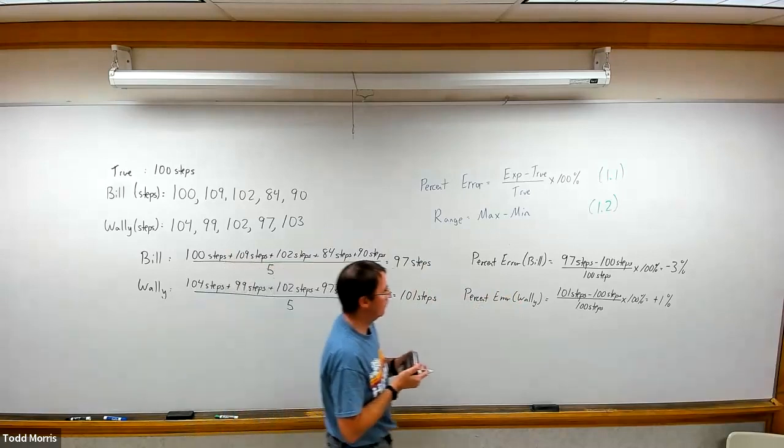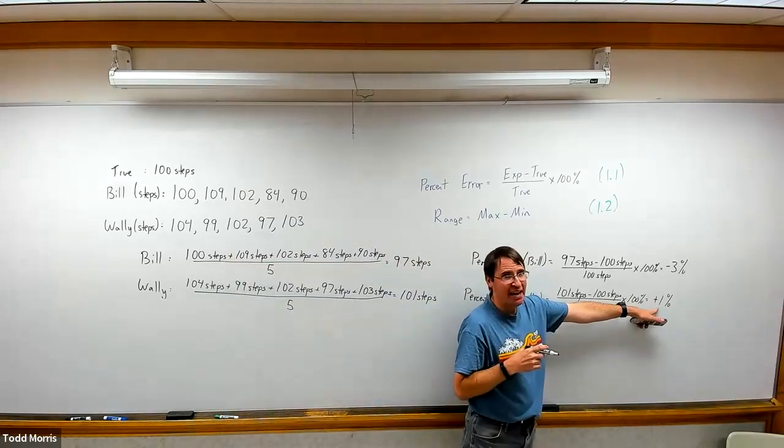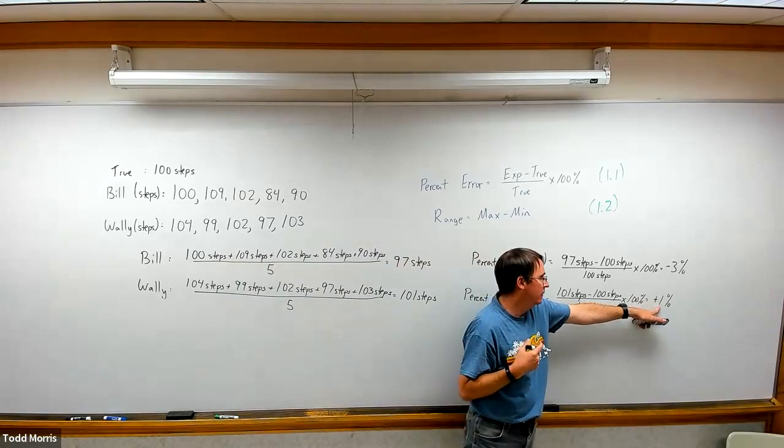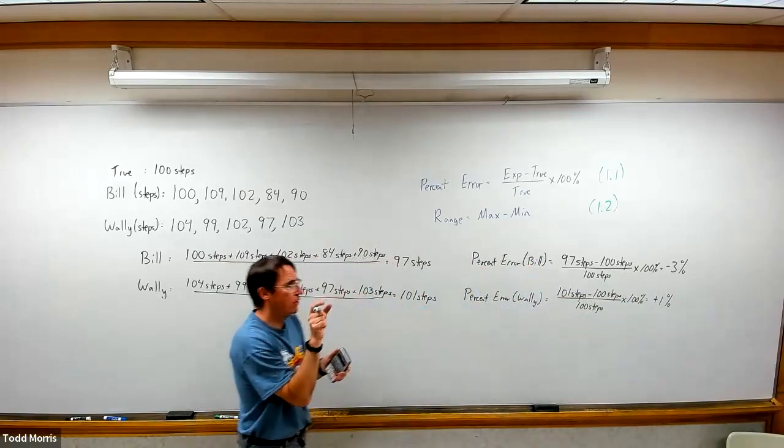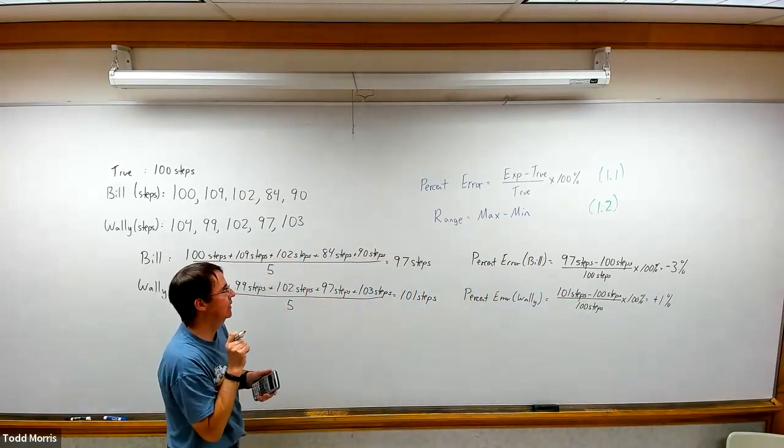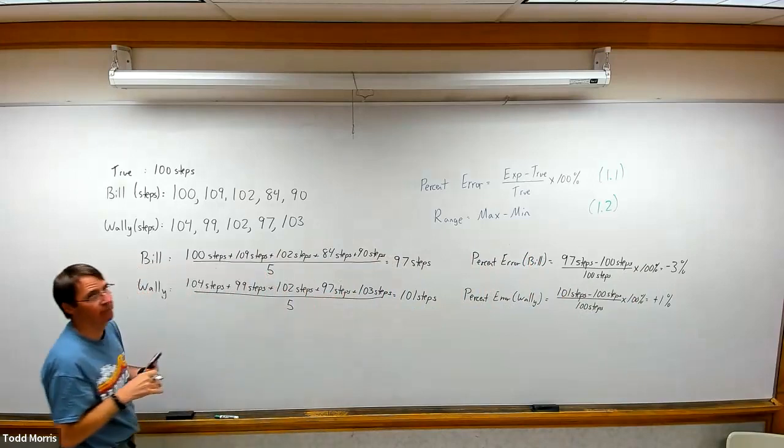You can see then that Wally's numbers are more accurate because his percent error, his absolute value of percent error, is less than percent error for Bill's. So the smaller the percent error, the more accurate the data was. So Wally's fitness tracker is certainly more accurate.